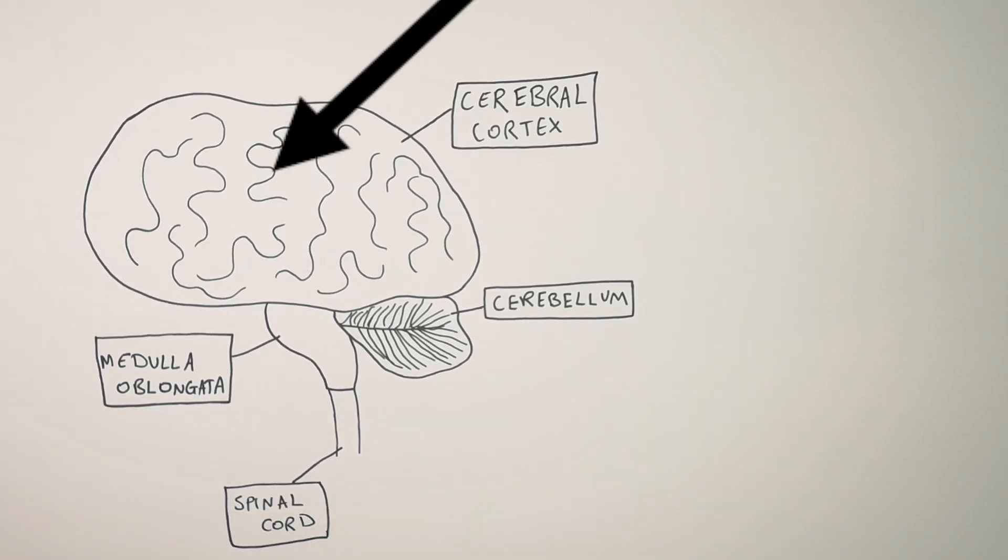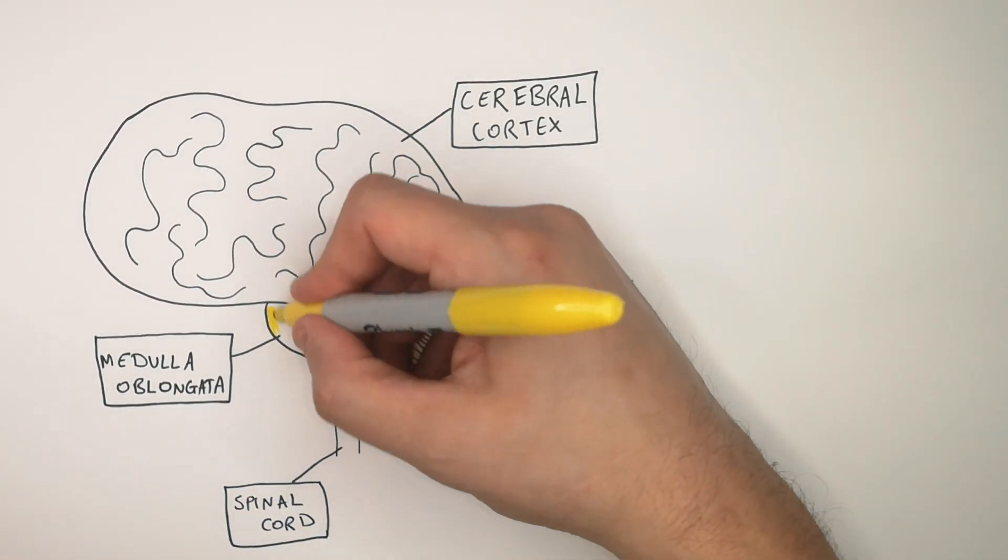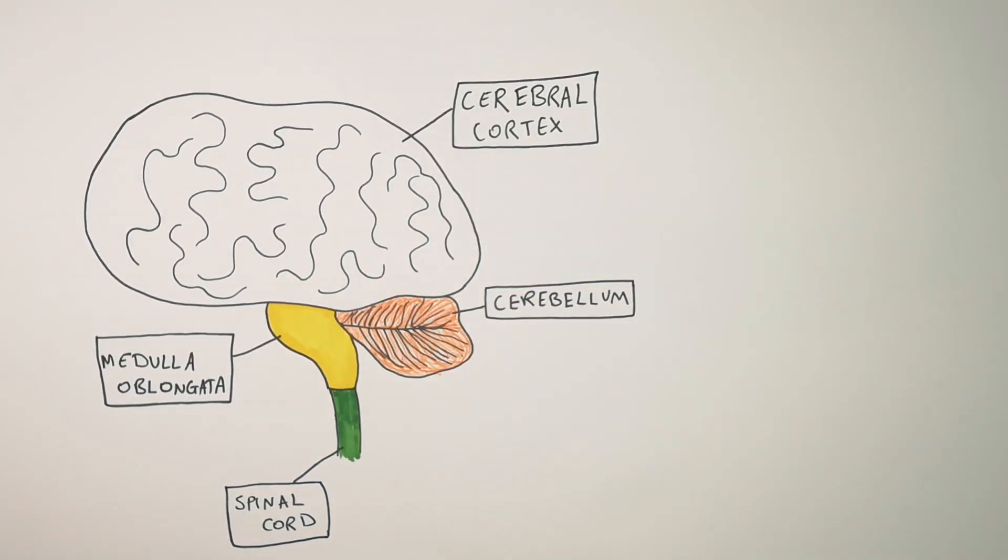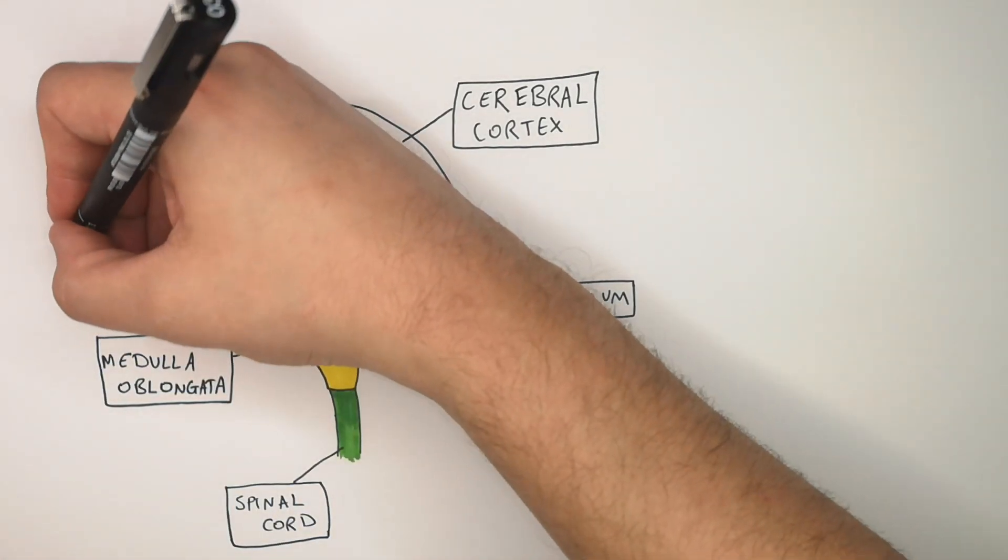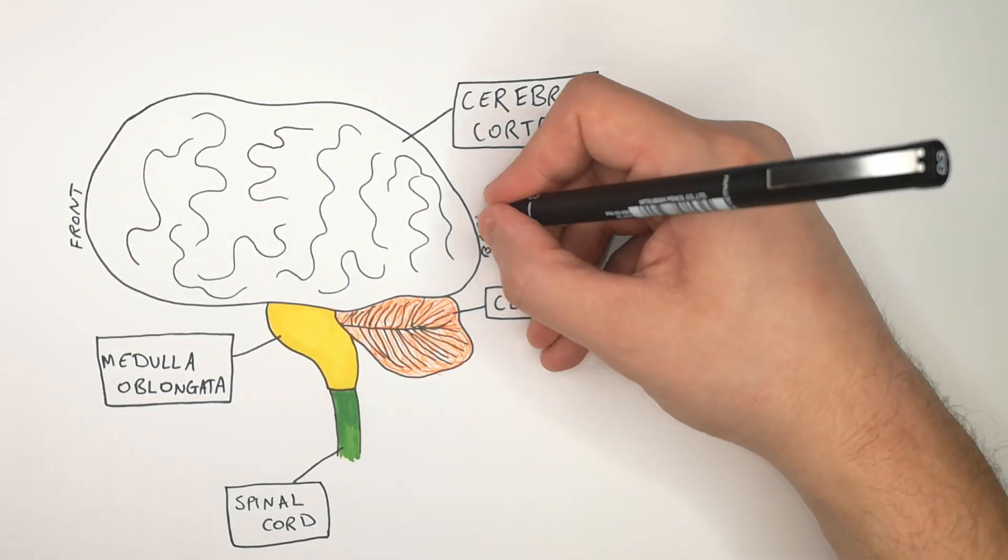So remember we've got the cerebral cortex which forms the majority of the brain, then there's the cerebellum, the medulla oblongata, and the spinal cord. There is a front of the brain which is where our forehead is, and then there is a rear of the brain which is at the back of our head.